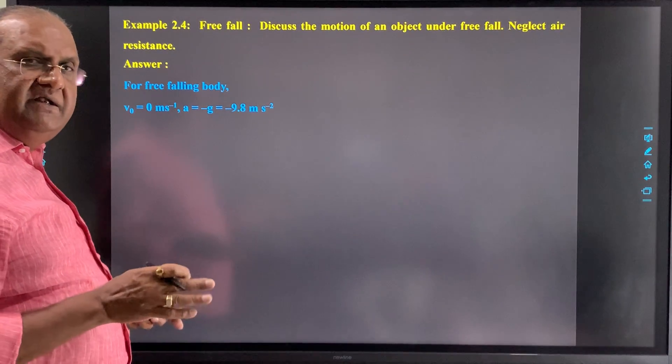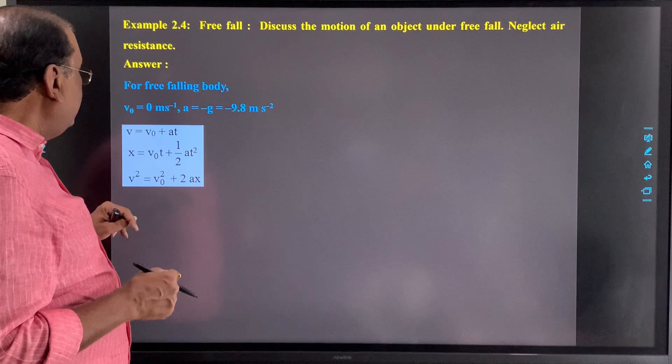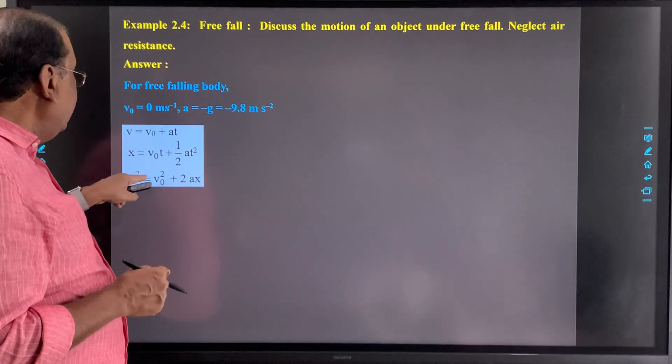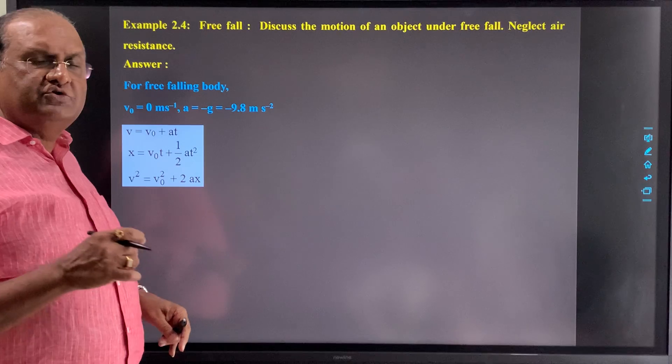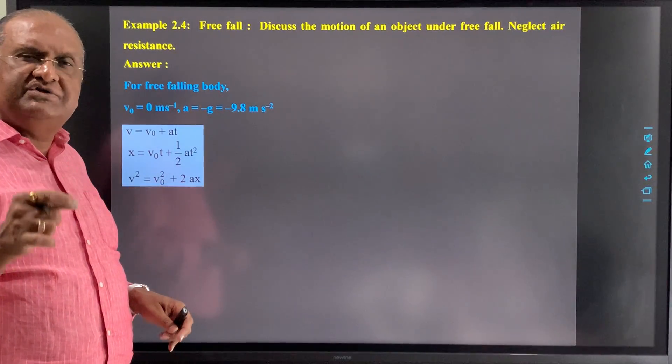Now v equal to v₀ plus at, x equal to v₀t plus half at square, and v square equal to v₀ square plus 2ax. These are our three equations of motion with constant acceleration.